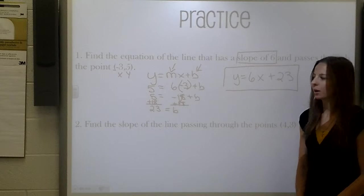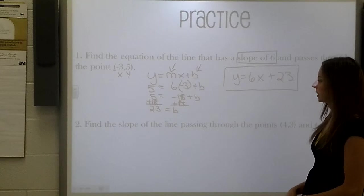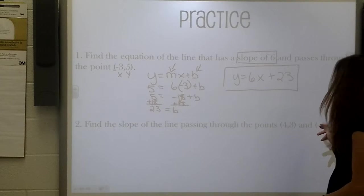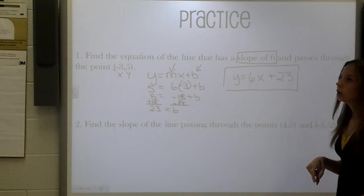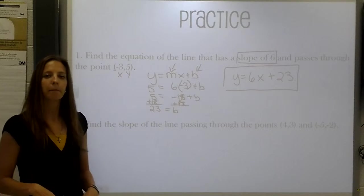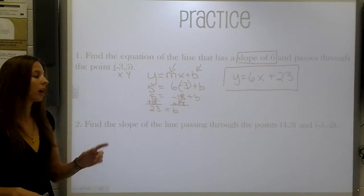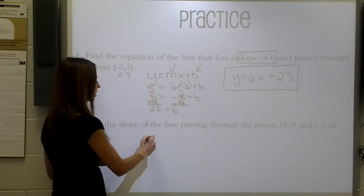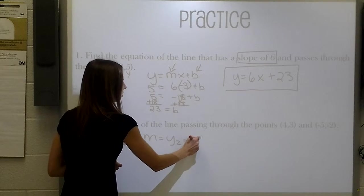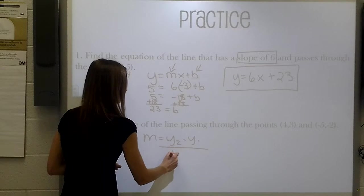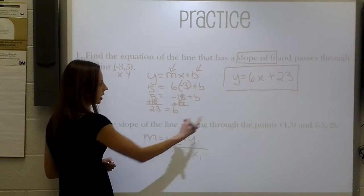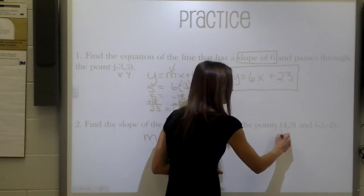Let's look at our next problem. Find the slope of a line that passes through the points 4, 3 and negative 5, negative 2. We know that if we're given two points on a line, but we're not given the picture of the line, we can use this formula of slope to solve. So what we're going to do is, let's go ahead and label these just so we don't get confused.